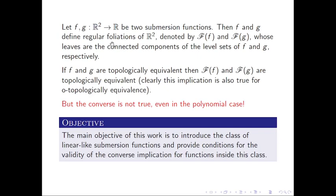If f and g are R² submersion functions, then f and g define regular foliations of R² whose leaves are the connected components of the level sets of f and g respectively. If f and g are topologically equivalent, then the respective regular foliations are also topologically equivalent. In fact, this implication is also true for oriented topological equivalence. But the converse is not true even in the polynomial case.